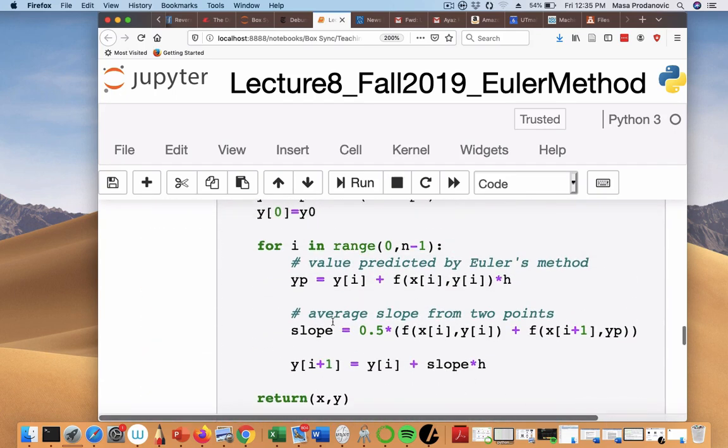Error has basically improved in order of h and that's why I get closer to analytic. Did everybody get this for Heun? Again, I just estimated slope differently.